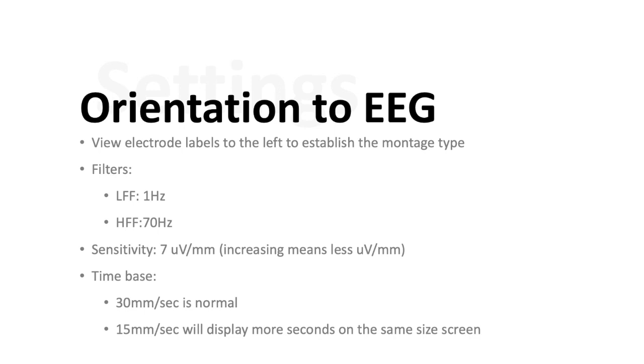The next thing to do is to check your filters. A low frequency filter should be set at 1 hertz for a normal value and a high frequency filter should be set at 70 hertz. I really recommend you make your first pass-through of an EEG using these normal frequency filter settings. The sensitivity is 7 microvolts per millimeter on a normal EEG. When you increase sensitivity, you actually have less microvolts per millimeter because that's meaning it's more sensitive.